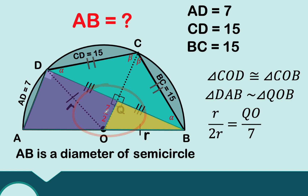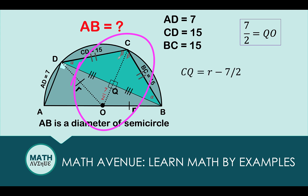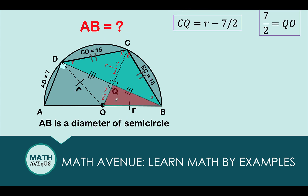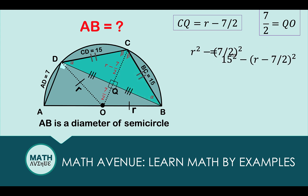To find the length of CQ, we know CO is a radius and QO is 7/2, so CQ equals the radius minus 7/2. To use the Pythagorean theorem, look at the right triangle where QB² equals OB² minus OQ², which is R² minus (7/2)². Similarly, in the yellow right triangle, QB² equals the hypotenuse squared minus the leg CQ squared — the hypotenuse is 15 and CQ is R minus 7/2. Since both expressions equal QB², we can now form this equation.